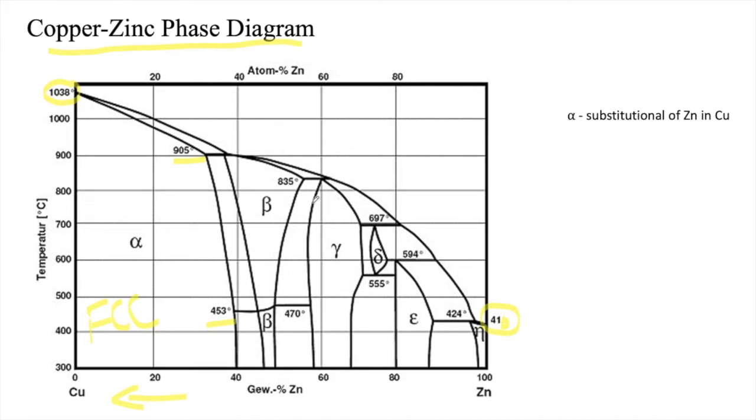And the beta BCC undergoes two forms that is ordered and disordered beta. The ordered beta is beta prime until 453 degrees Celsius. Above 453 degrees Celsius, it is disordered beta.